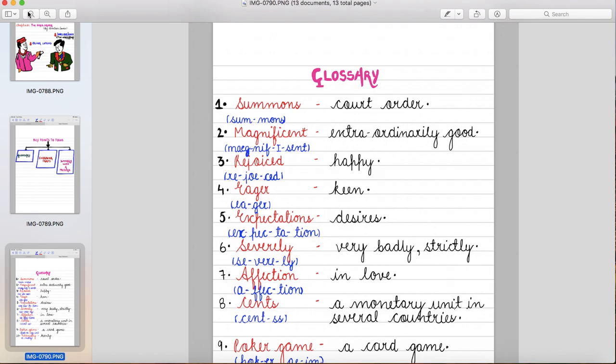Fourth eager, keen means ichuk. Fifth expectation that means desires. Six severely that means very badly, strictly. Seventh affection that means in love.